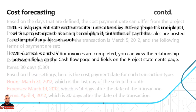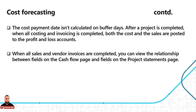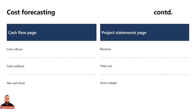The cost payment date is not calculated on buffer days. After the project is completed with all costing and invoicing complete, both cost and sales are posted to the P&L account. When all sales and vendor invoicing are completed, you can view the relationship between the cash flow page — showing cash inflows, cash outflows, and net cash flow — and the project statement page, showing revenue, total cost, and gross margin.